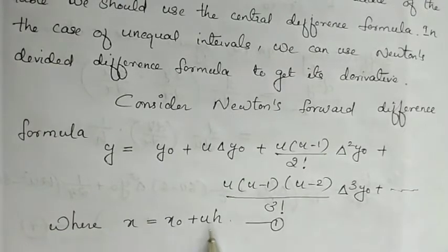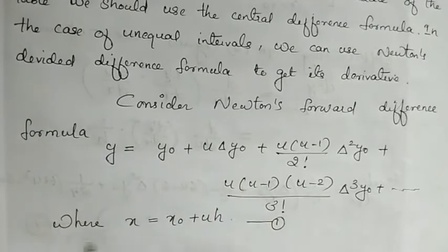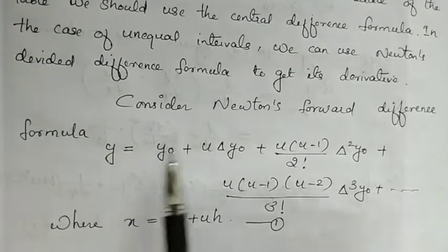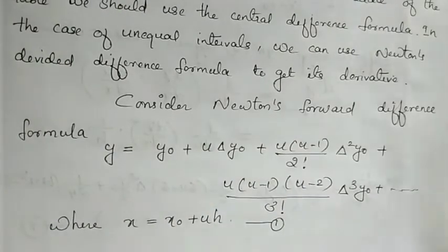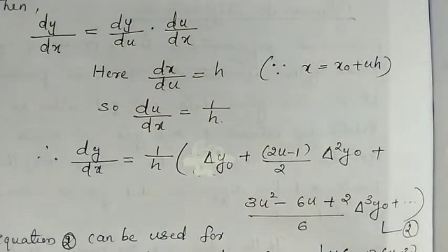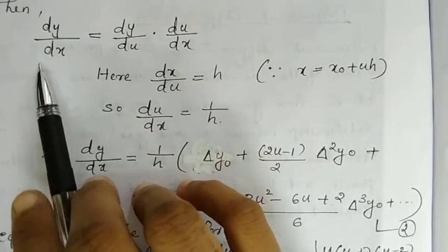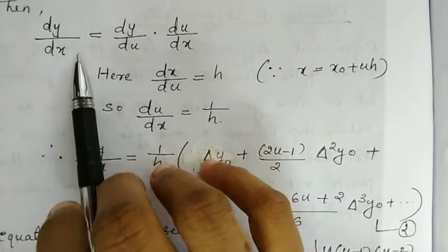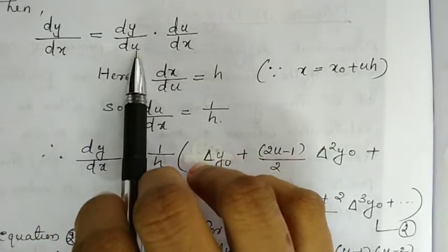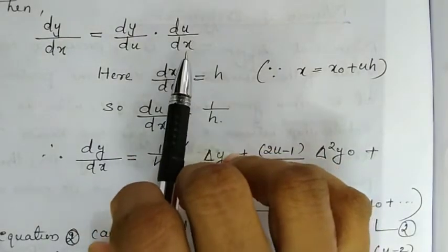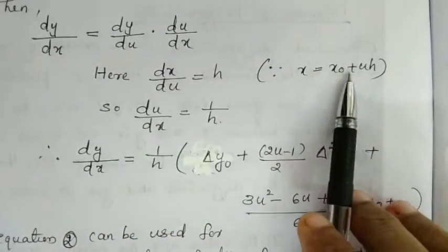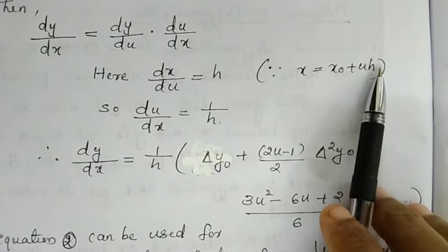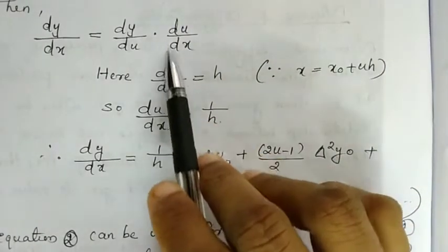Where x = x₀ + u·h. To find dy/dx, we apply the chain rule: dy/dx = dy/du × du/dx. Since x = x₀ + u·h, we differentiate to find dx/du.